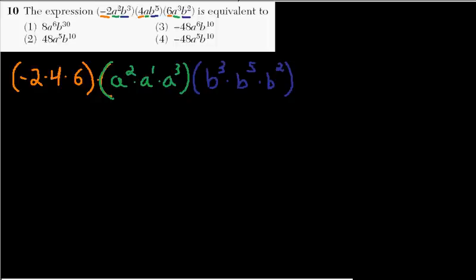And now what we want to do is multiply, we are multiplying, we're not adding just yet. So if we multiply negative 2 times 4, that's negative 8. 8 times 6 is 48, but it's negative, so this is negative 48 right here.